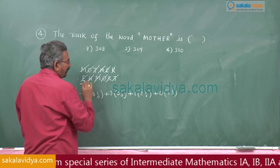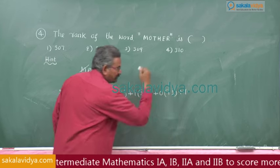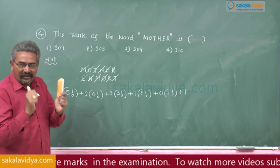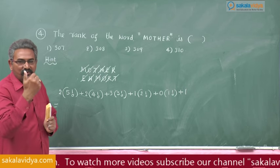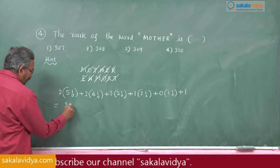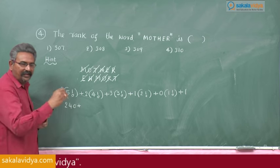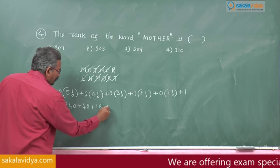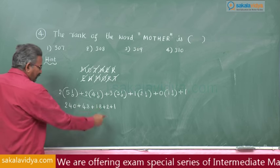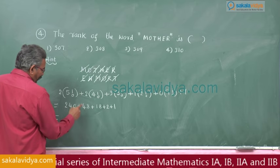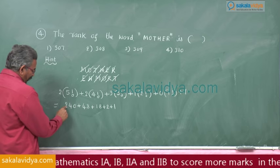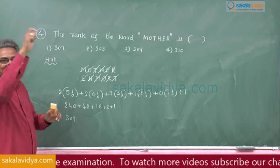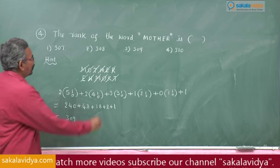Now R — R, nothing before it. After every last letter, add 1. Now calculate: 5 factorial is 5×4×3×2×1 = 120. So 120 into 2 = 240. Plus 4 factorial is 24; 24 into 2 = 48. Plus 3 factorial is 6; 6 into 3 = 18. Plus 1 into 2 factorial = 2. Plus 0. Plus 1. Total: 21 plus 48 is 69; 240 plus 69 is 309. The rank of the word MOTHER is obtained without using any traditional method. Our answer is 309.